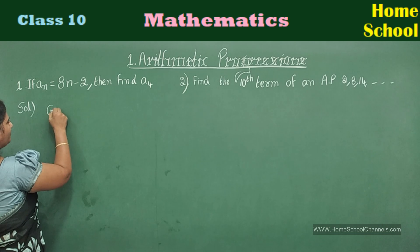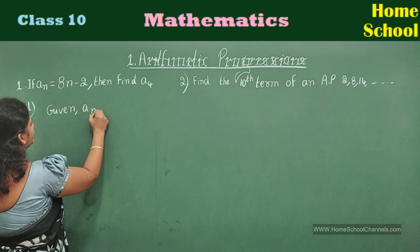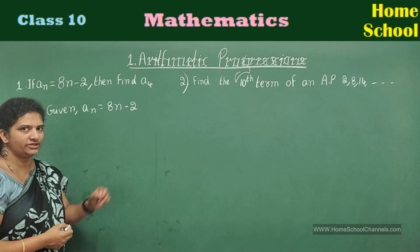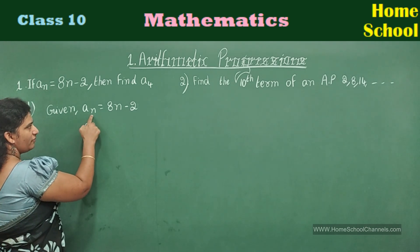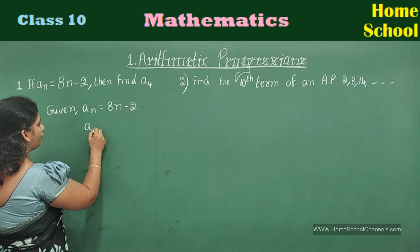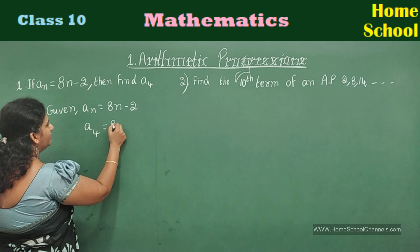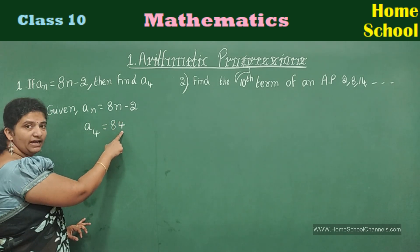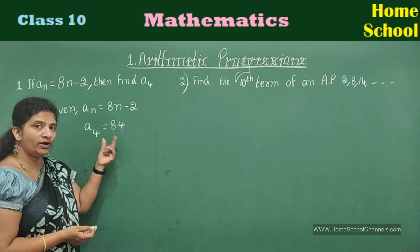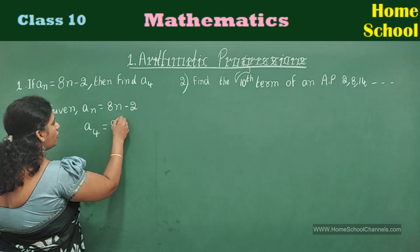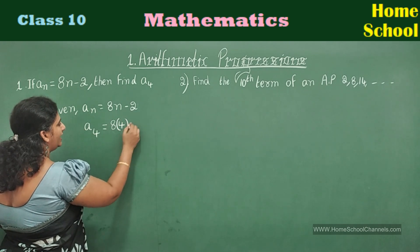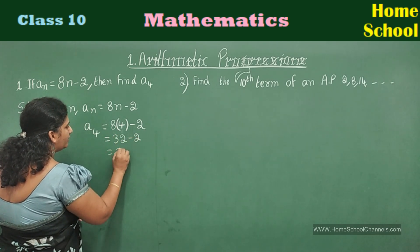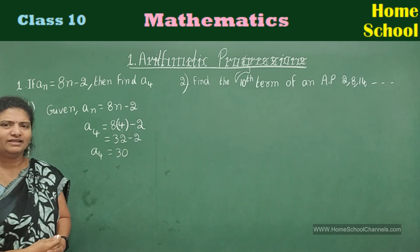Let's begin the solution. Given: aₙ = 8n − 2. We need to calculate a₄. In the place of n, substitute the number 4. a₄ = 8(4) − 2. Important: don't write 4 beside 8 without a bracket — it would look like 84. Always make a habit of putting a bracket: 8 × 4 minus 2. 8 fours are 32, and 32 minus 2 equals 30. Therefore the fourth term is 30. You will easily score 2 marks.